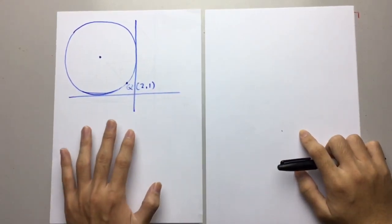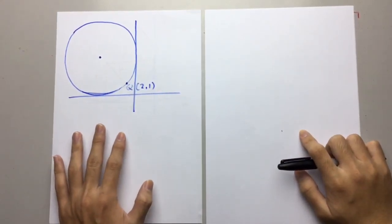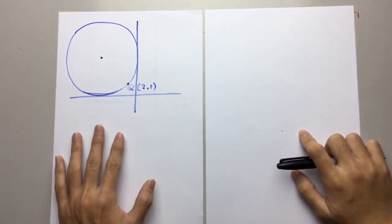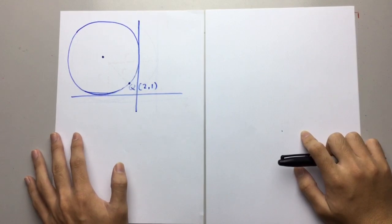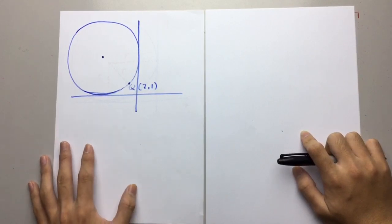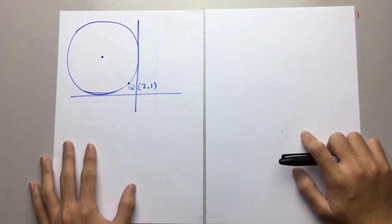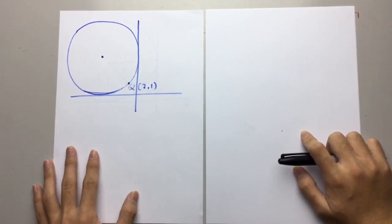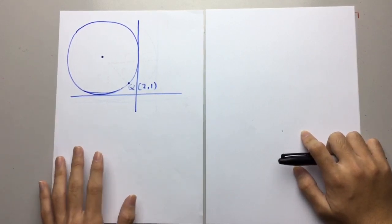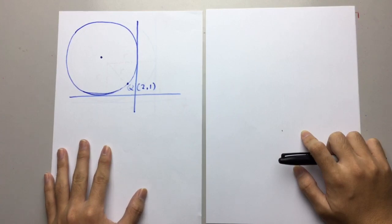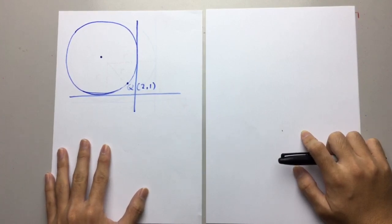Welcome to Mr. Simon's YouTube channel. Today we are going to solve the very tough question on SPM 2017, question 6, which is the cylinder problem.